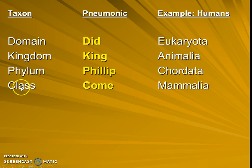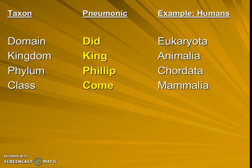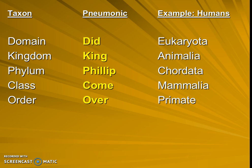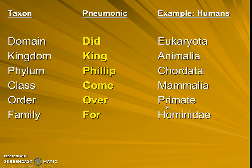Our next smaller category is class. For us as humans, we have hair as our animals — we not only have backbones but we also have hair and mammary glands, meaning we breastfeed and make milk to feed our young. That's a smaller category within animals with backbones. Then order is an even smaller category — specifically, we are a primate type of mammal with a backbone. And then our family: we are of the hominid-style family.